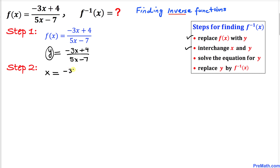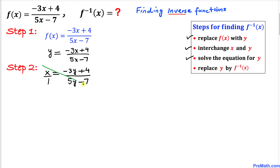After interchanging, we get x equals negative 3y plus 4 divided by 5y minus 7. Our next step is to solve this equation for y, meaning we are going to isolate y. The very first thing we are going to do is make x a fraction by putting 1 underneath, and then we are going to cross multiply.